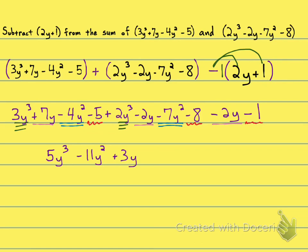And then my constants with the red squiggly line. Let's see, minus 5, minus 8, minus 1. And that is minus 14.